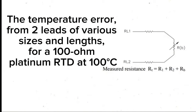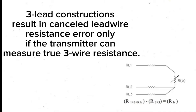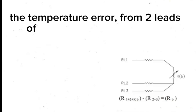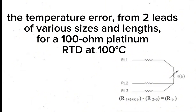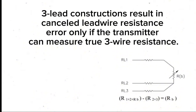Three-lead constructions result in cancelled lead wire resistance error, but only if the transmitter can measure true three-wire resistance. The temperature error from two leads of various sizes and lengths for a 100-ohm platinum RTD at 100°C is eliminated under this condition.